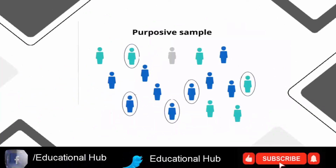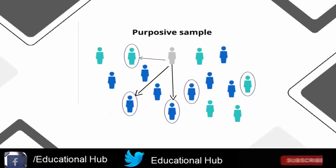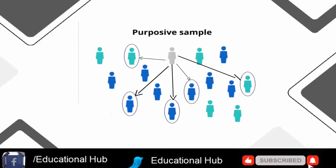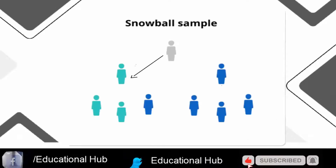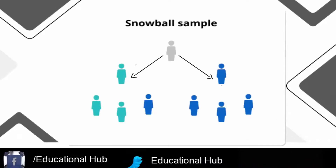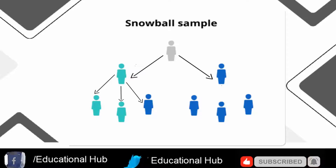3. Purposive sampling. This type of sampling, also known as judgment sampling, involves the researcher using their expertise to select a sample that is most useful to the purposes of the research. 4. Snowball sampling. If the population is hard to access, snowball sampling can be used to recruit participants via other participants. The number of people you have access to snowballs as you get in contact with more people.